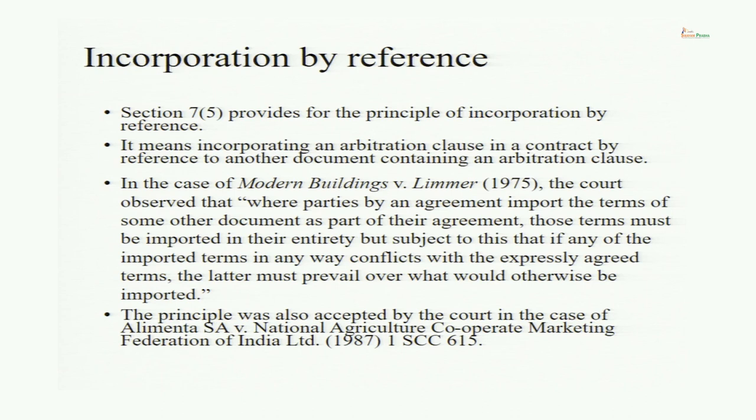Let us start the first thing: incorporation by reference. This is part of Section 7 itself. We have done the first four subsections of Section 7. An arbitration agreement is an agreement to arbitrate present or future disputes; it can be part of the main contract or in the form of an independent agreement. Whatever the case, it has its independent existence. The agreement must be in writing — a written arbitration agreement means three things: if actually written, it must be signed by the parties; if in correspondence, there must be a permanent record; and it can also arise out of claim and defence statements.